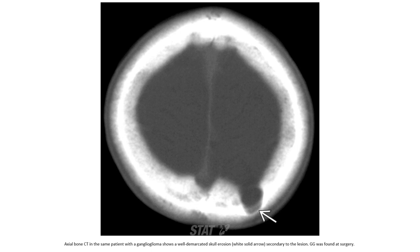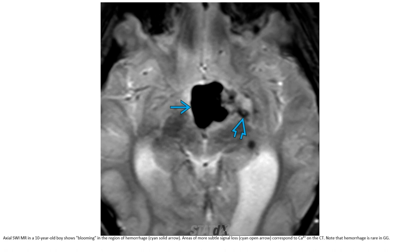Bone CT in the same patient with ganglioglioma shows a well-demarcated calvarial erosion secondary to the lesion. On MRI, susceptibility-weighted imaging in a 10-year-old shows blooming in the region of hemorrhage, and areas of more subtle signal correspond to calcification on CT. Note that hemorrhage is rare in ganglioglioma.